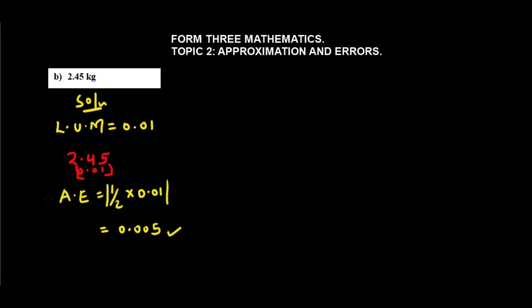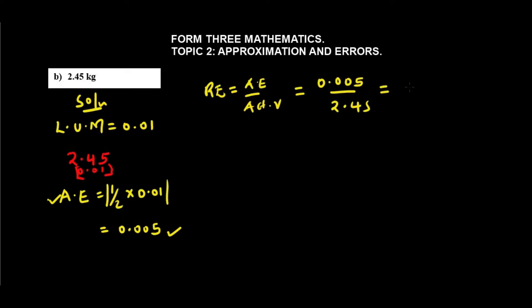The next step is to determine the relative error. The relative error is absolute error over the actual value. Our absolute error is 0.005 over the actual value of 2.45. When worked out, this gives us approximately 0.002041. From there, the next step is to calculate the percentage error.